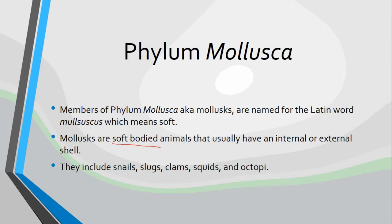There are lots of different kinds of animals found in phylum mollusca. Just to name a few: we have the snails, slugs, clams, squids, and of course the octopi, which is plural for octopus.